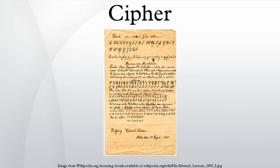Most modern ciphers can be categorized in several ways: by whether they work on blocks of symbols usually of a fixed size, or on a continuous stream of symbols; by whether the same key is used for both encryption and decryption, or if a different key is used for each. If the algorithm is symmetric, the key must be known to the recipient and sender and to no one else. If the algorithm is an asymmetric one, the enciphering key is different from, but closely related to, the deciphering key. If one key cannot be deduced from the other, the asymmetric key algorithm has the public-private key property and one of the keys may be made public without loss of confidentiality.